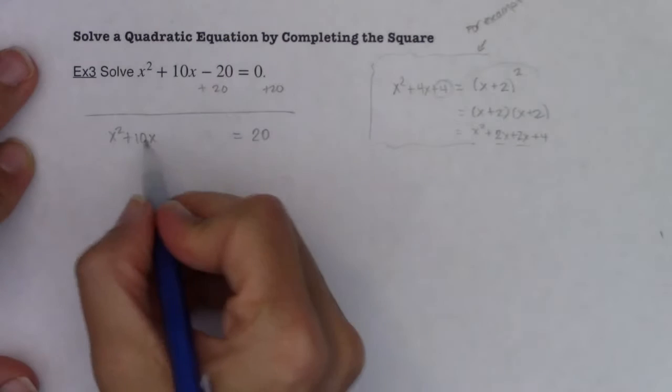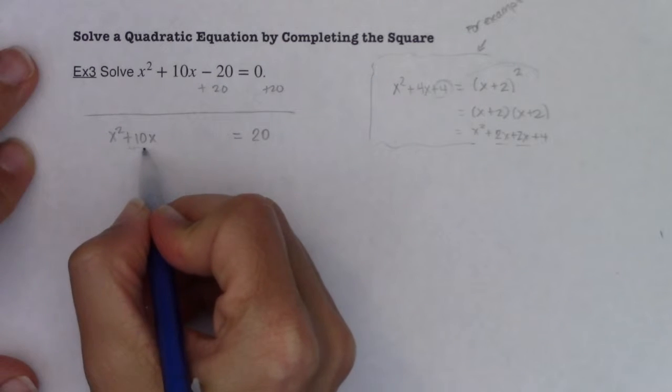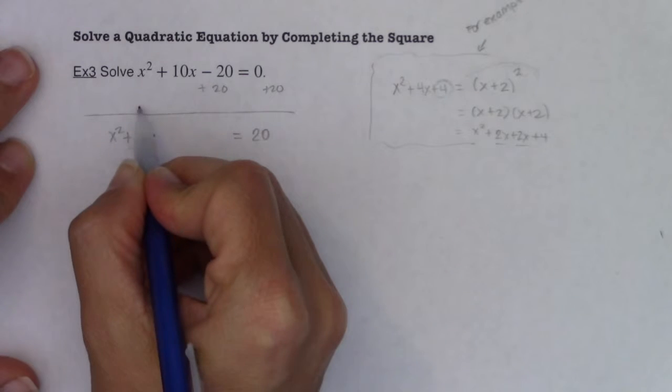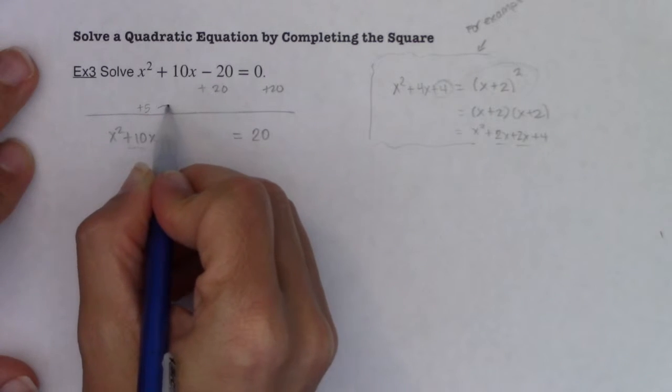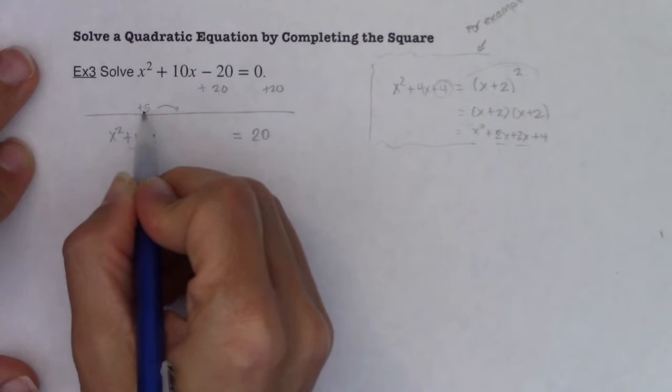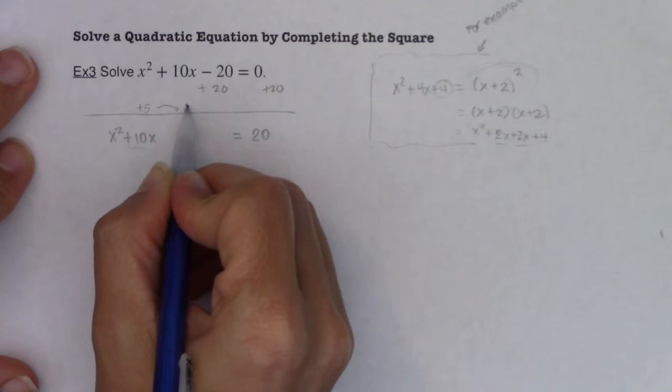So go with me. The number in front of our linear term right now is 10. Half of positive 10 is positive 5, okay? And I'm just putting these up here for notes. Square that number, all right? Positive 5 squared is 25.